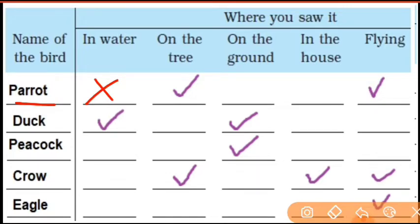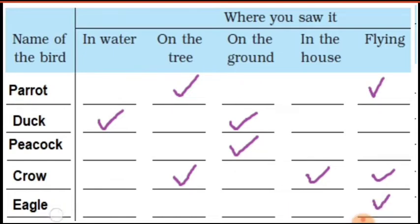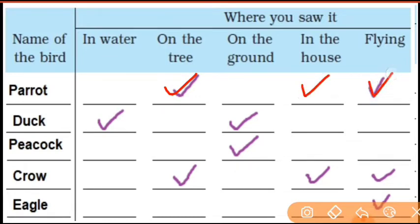You can see a parrot on the ground, in a tree. But mainly you see it in a tree. If you have a pet parrot, you see it in the house. You can also see it flying. So tick tree, house, and flying for parrot.